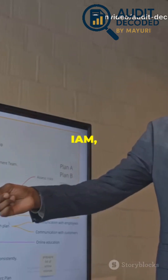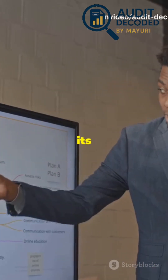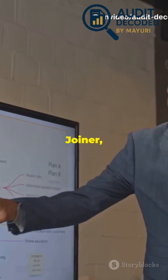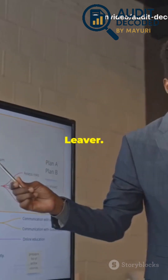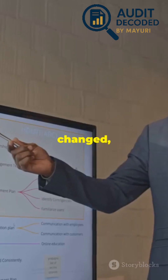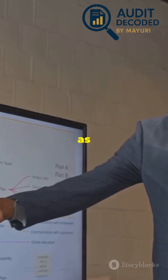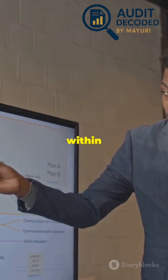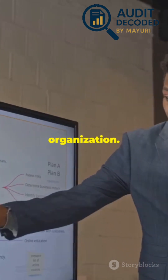To really understand IAM, you need to know its lifecycle: Joiner, Mover, Leaver. This framework helps you track how access is granted, changed, and removed as people come and go within your organization.